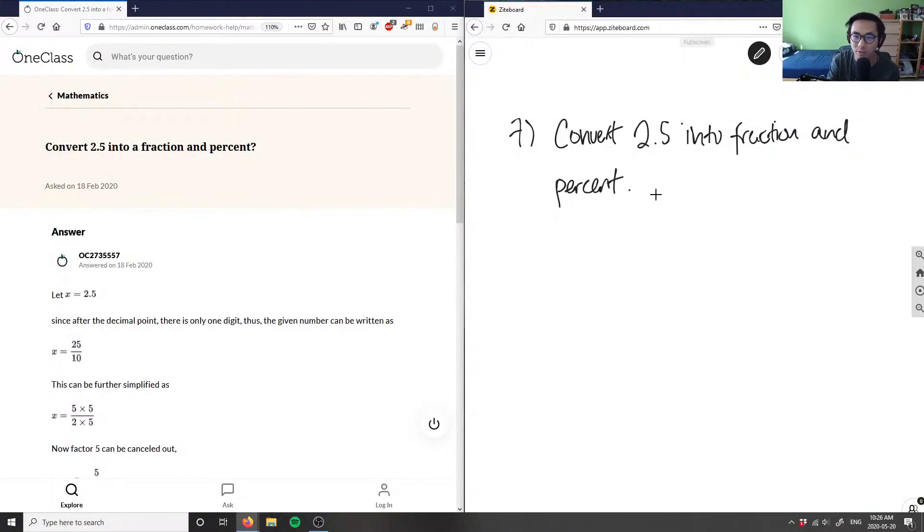So let's do fraction first. So 2.5 into a fraction. I have 2.5 here. So this part here is the whole number part. So this is whole.